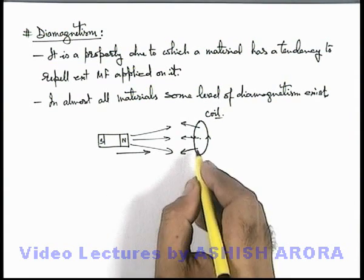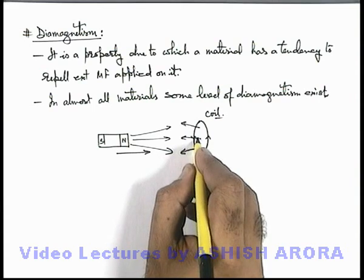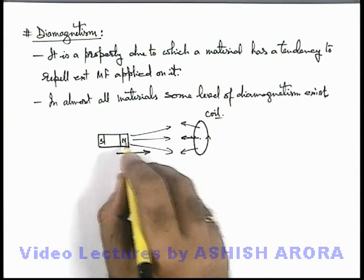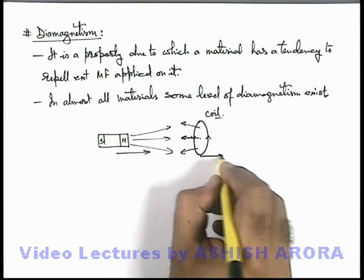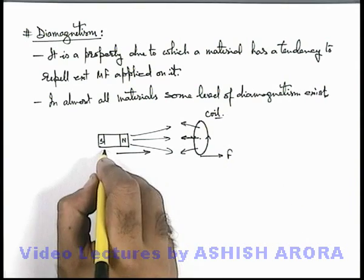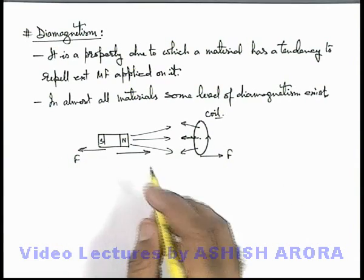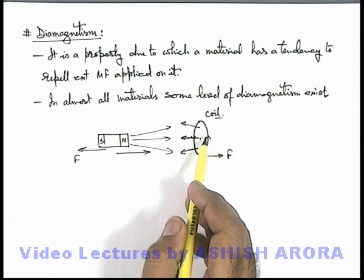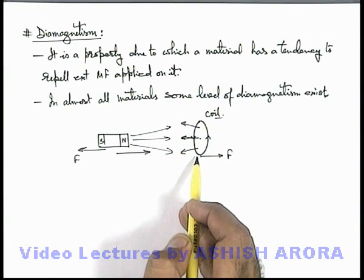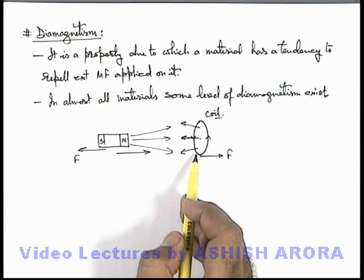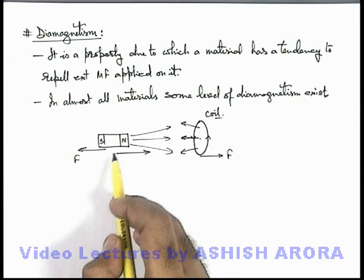So here we can say the coil, as it is producing magnetic field in opposition to the external field, the coil will experience a force toward right and magnet will experience a force toward left. So due to the induction in the coil, a repulsive force appears between the coil and the external source of field.